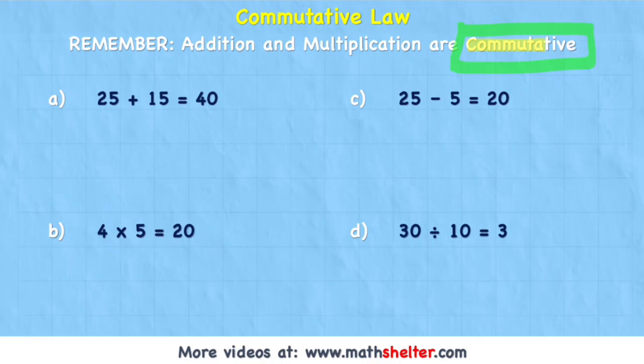Commute means to move. Maybe you've heard people commuting to work, moving to work. And what it means in terms of mathematics and the commutative law, it means that when we have two numbers that are added together to equal an answer, we can actually move those numbers into the other location and it will still get the same answer.